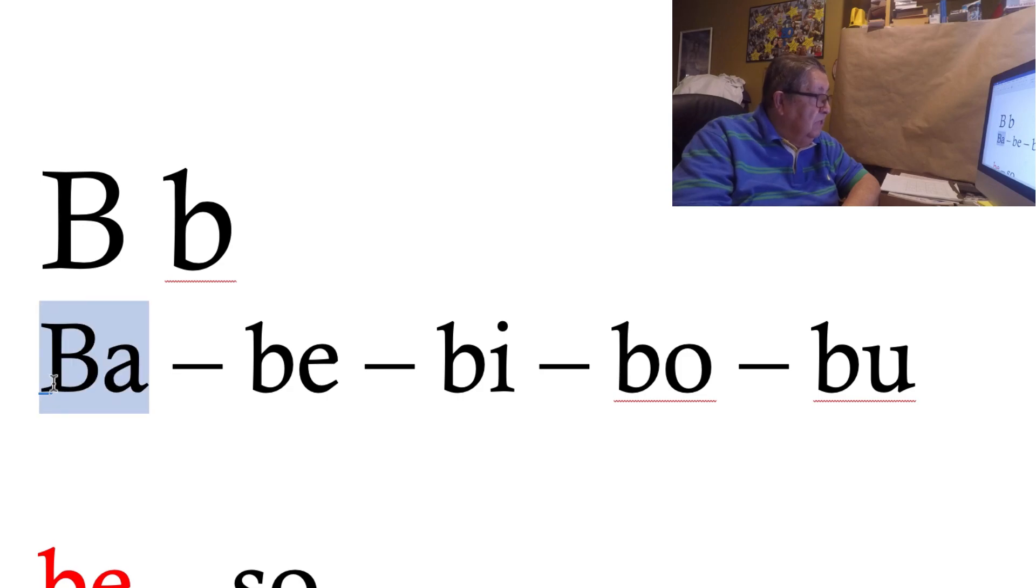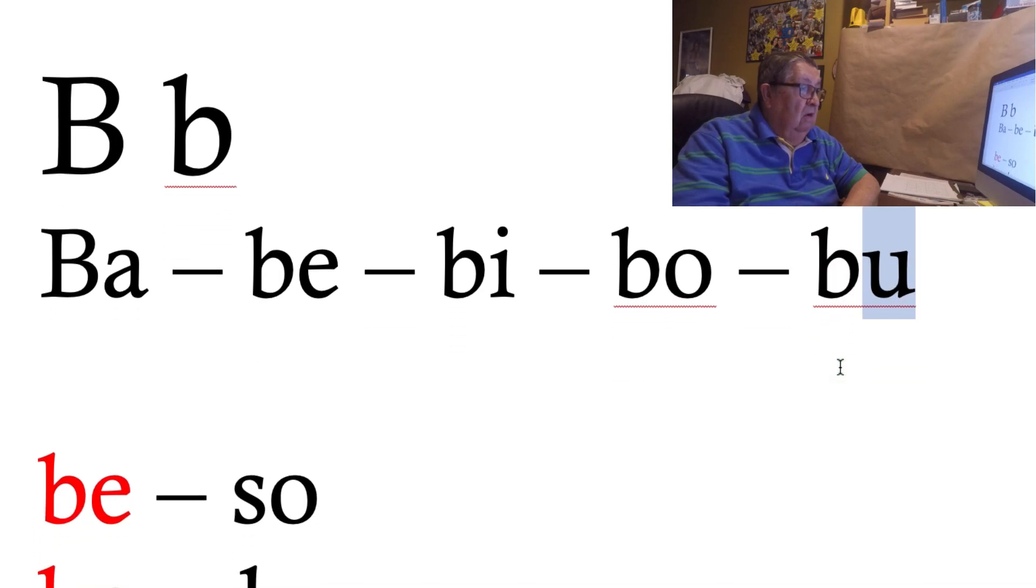Estas son sílabas. La letra con la vocal forman una sílaba. Esta la letra B con la E es otra sílaba y se llama be, con la I es bi, con la O es bo y con la U es bu, okay?